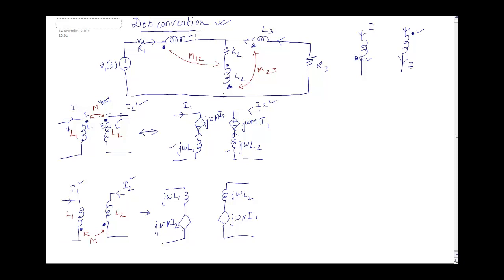Now for polarity: at this dot, I1 current is leaving, so the induced current should be entering the corresponding position — meaning this terminal is positive and the other is negative. The current I2 here is a separate current. Similarly, when I2 is leaving its dot, the induced current should be entering the other side, making that terminal positive and the adjacent terminal negative. Don't take that current to be the same as I1.